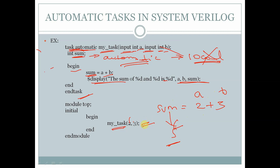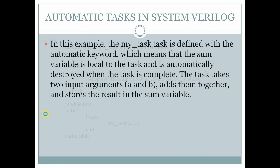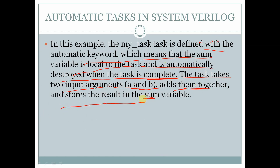Once the task completes and is terminated, the local variable sum gets deleted because the task is automatic — so the value 5 will be deleted. In this example, my_task is defined with the automatic keyword, which means the sum variable is local to the task and is automatically destroyed when the task completes. The task takes two input arguments a and b, adds them together, and stores the result in the sum variable.